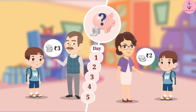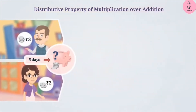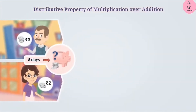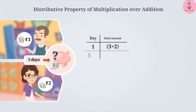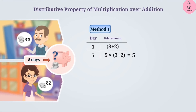There are two ways to solve this. Method 1: calculate the total amount saved in a day, which is 3 plus 2 rupees. So in 5 days you will save 5 into (3 plus 2) rupees. The solution is 5 into 5, which is equal to 25.